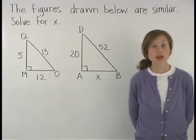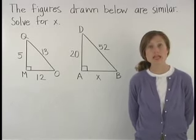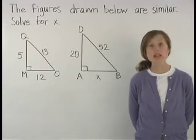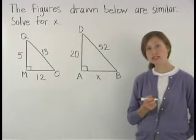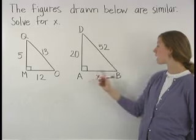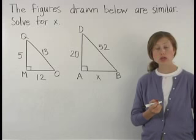If two triangles are similar, then the ratios of their corresponding sides will be equal. Here, we know that triangle QMO is similar to triangle DAB, so the ratios of their corresponding sides will be equal.